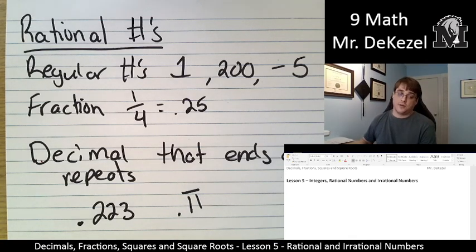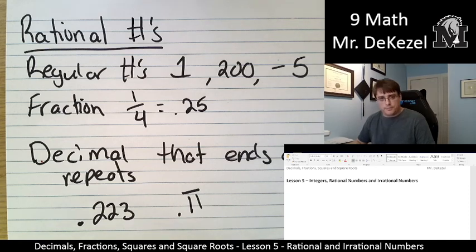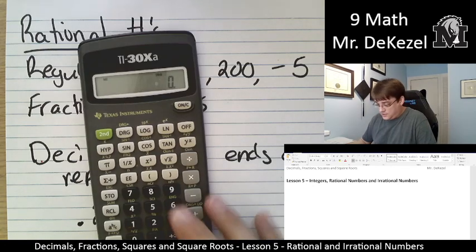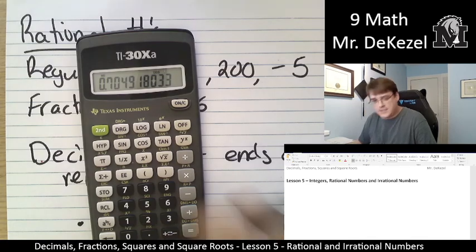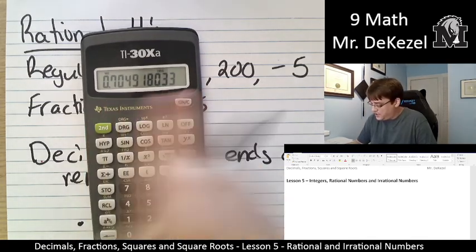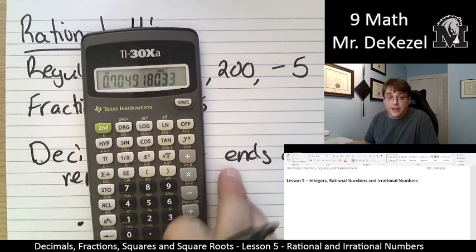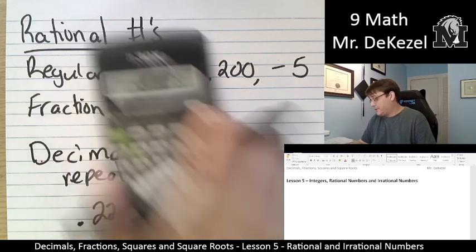Any decimal that specifically ends or repeats. And if you're not sure what I mean by ends, I want you to punch a few different... Let's do 43 divided by 61. You see how this decimal runs off the edge of the calculator? It keeps going and going forever. And when you get numbers like that, those are irrational numbers.